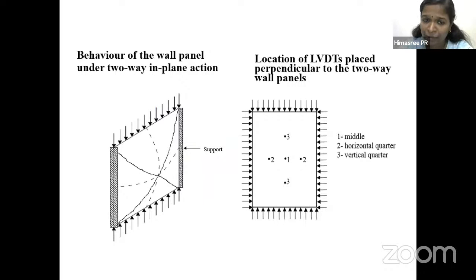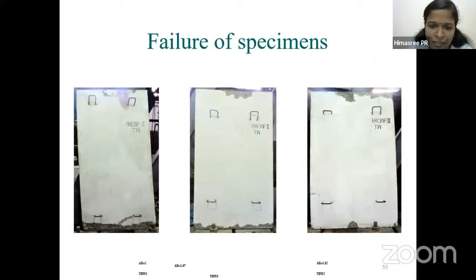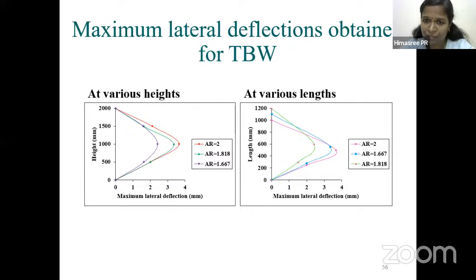Since the panel is supported on all four sides, it will bend in double curvature — cracks develop from corner to corner and bending occurs in two directions. LVDTs were located at various positions on the wall panel. No significant visible deflection was found; failure happened by crushing. However, from the graphs, some deflection was observed along both the length and the height, with the maximum at the center, confirming biaxial bending behavior.